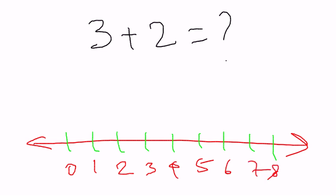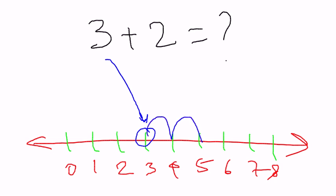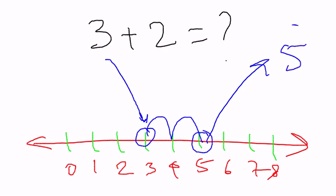Now since we have to add 3 and 2, we'll start with 3. To add 2, we'll move two positions to the right — 1, 2 — and we land on 5. So the answer is 5.